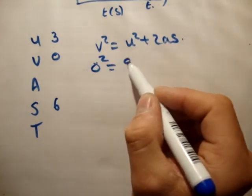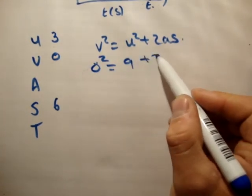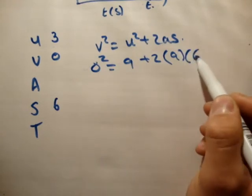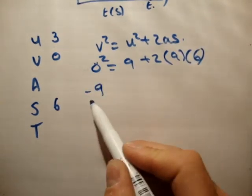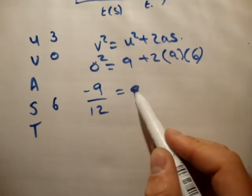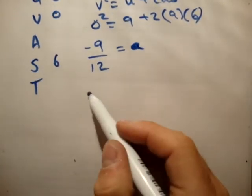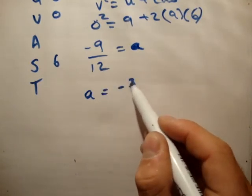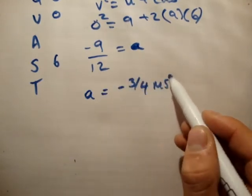So, it's 0 squared is equal to 9 plus 2 times a times 6. Therefore, 9 over 12 is equal to a. Therefore, a is equal to minus 3 over 4 meters per second squared.